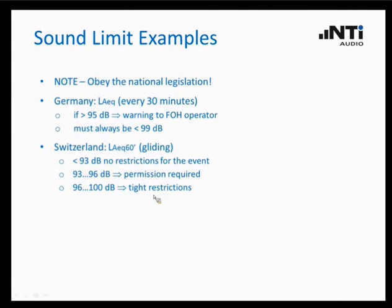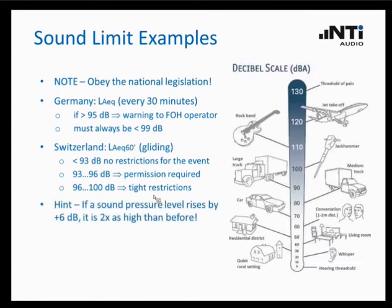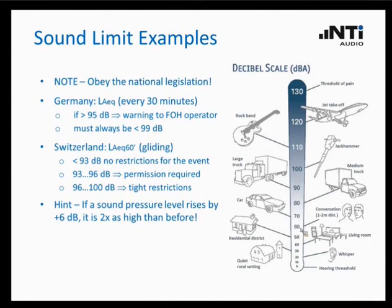Just one more hint about the sound pressure level and the decibel scale. For example, a conversation between two persons at a distance of 1 to 2 meters is typically 60 dB loud. If we add 6 dB to this level, we would actually double the sound pressure level — 6 dB plus means doubling the level. So another 6 dB would again double it, quadrupling the original 60 dB level.